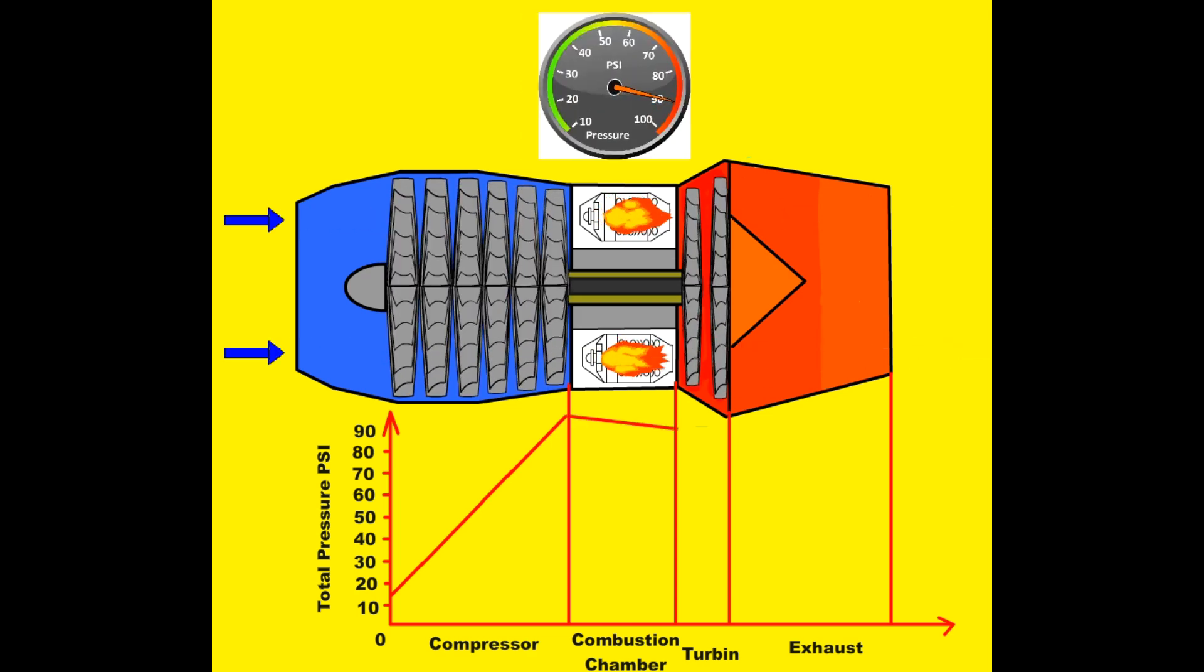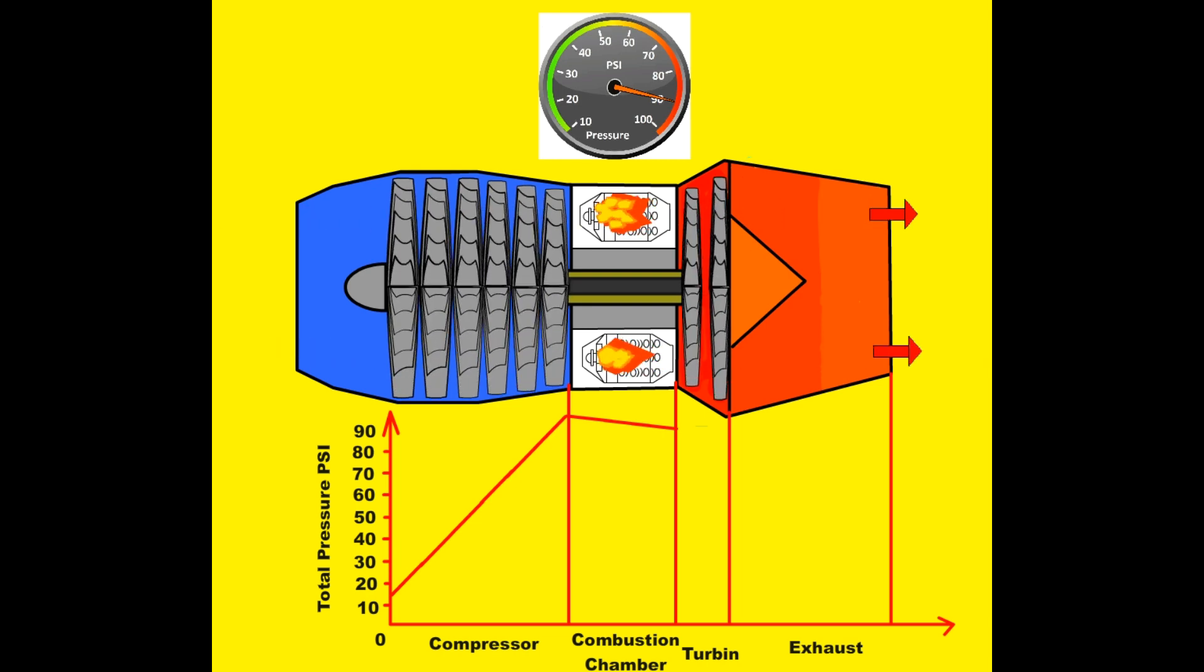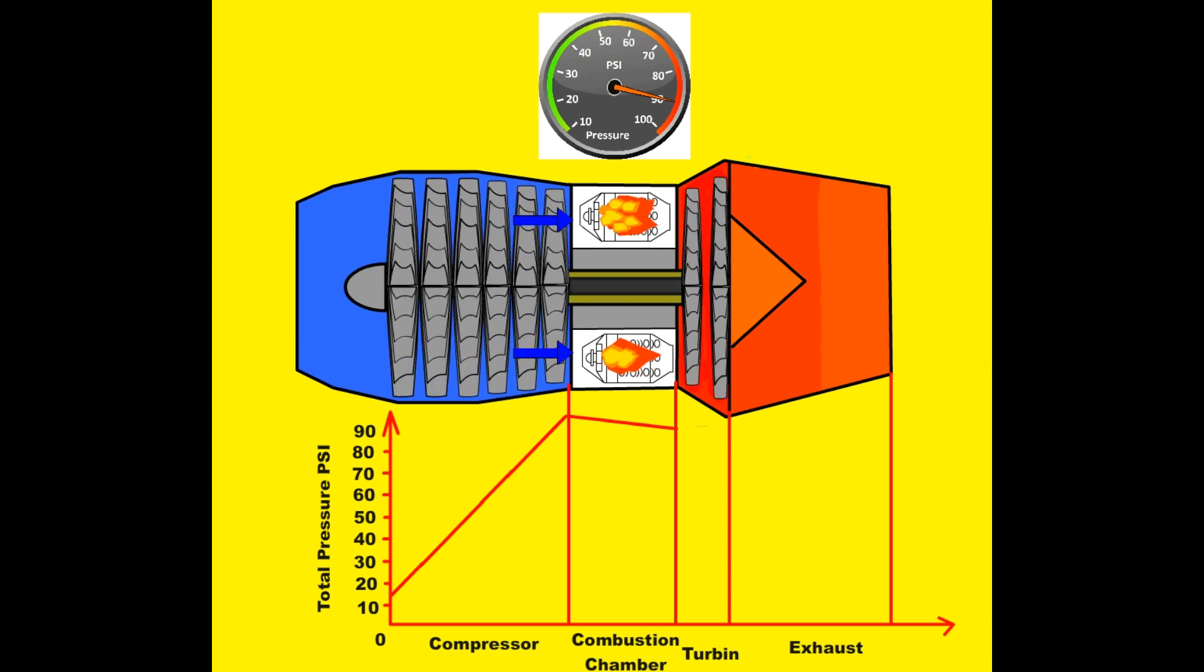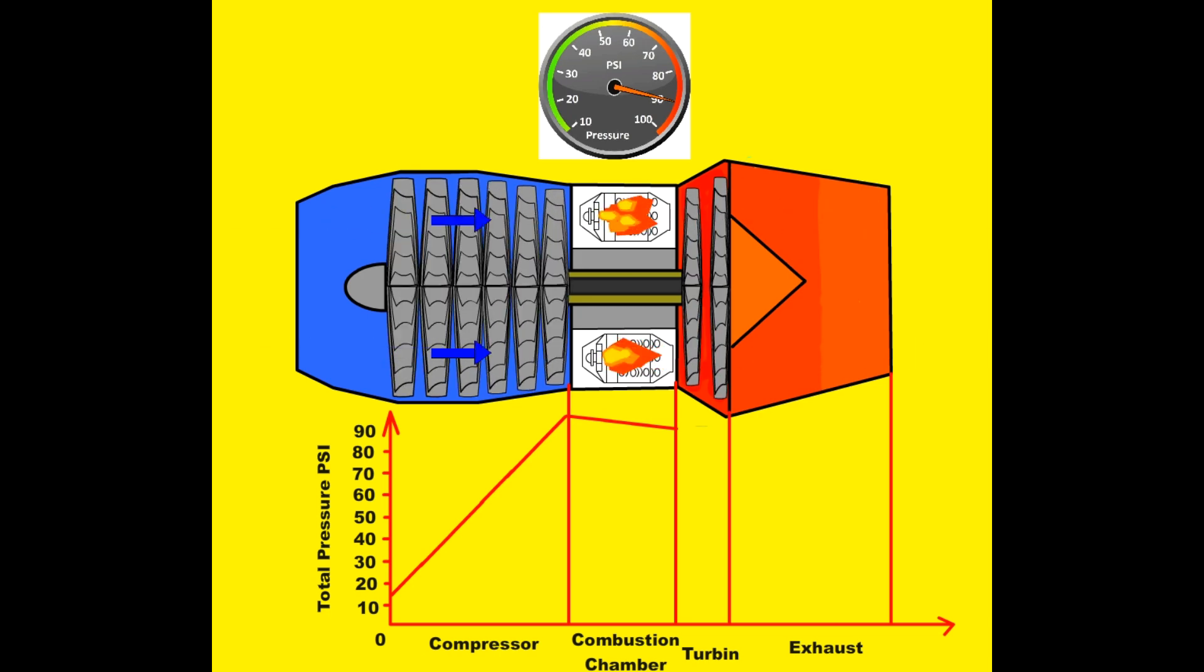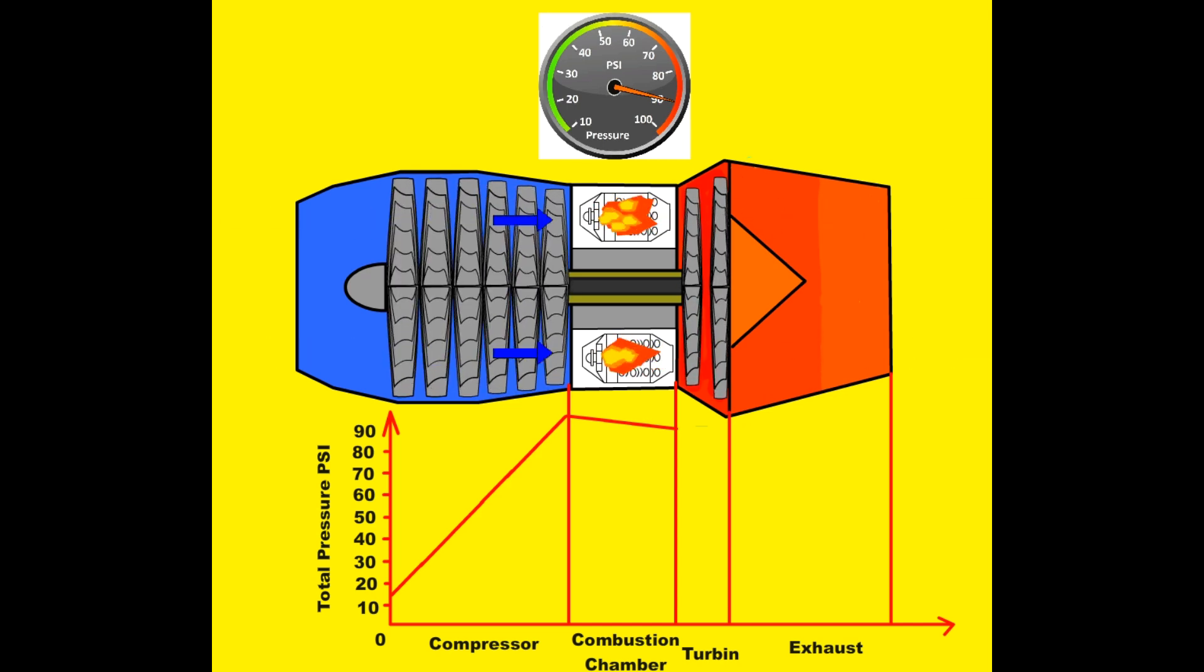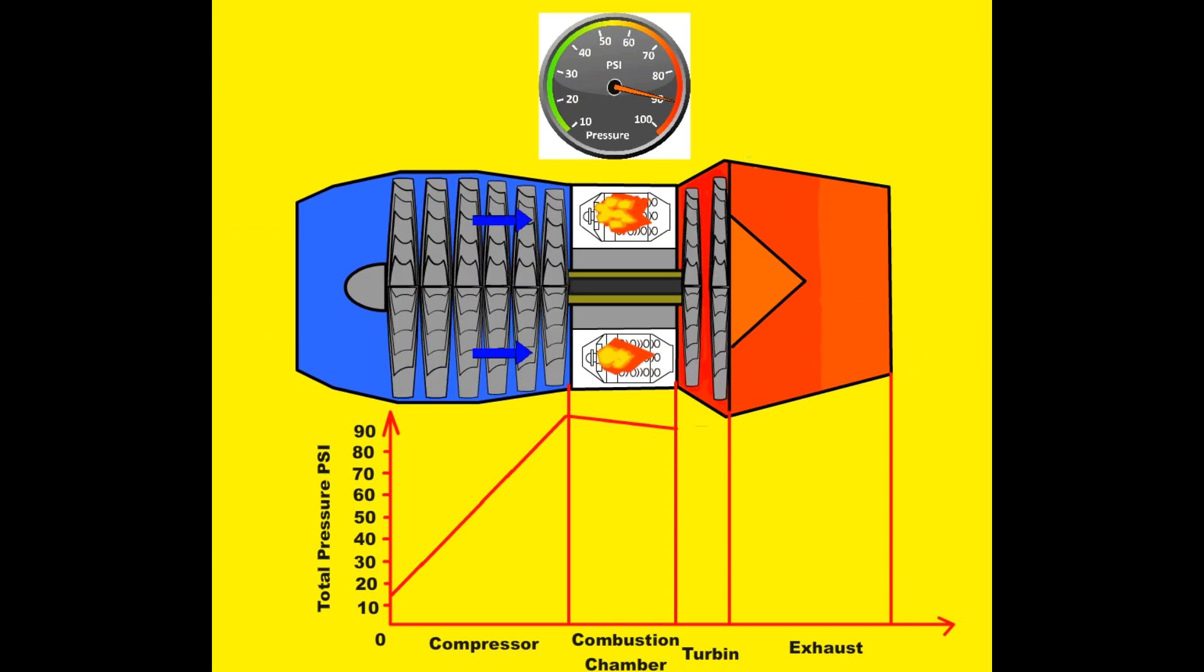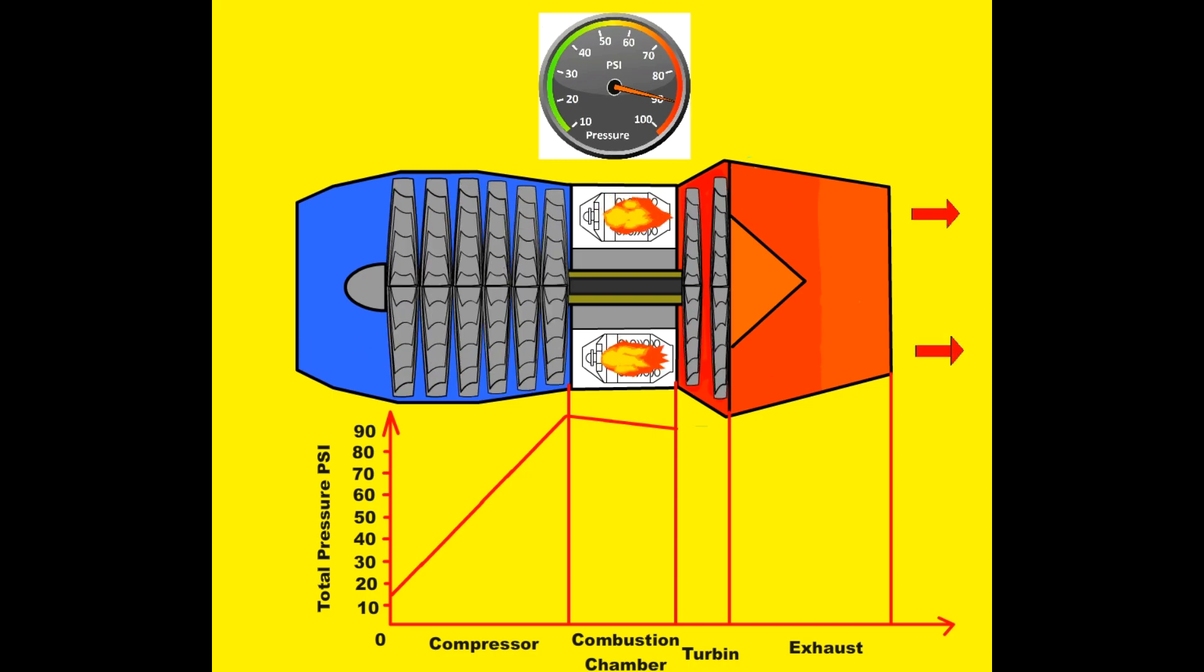Burning of atmospheric air in the combustion chamber takes place at constant pressure as required by Brayton's law. The pressure of the burning gases decreases a little, but the volume increases a little with the effect of the combustion. The higher combustion temperature, the larger volume of gases.